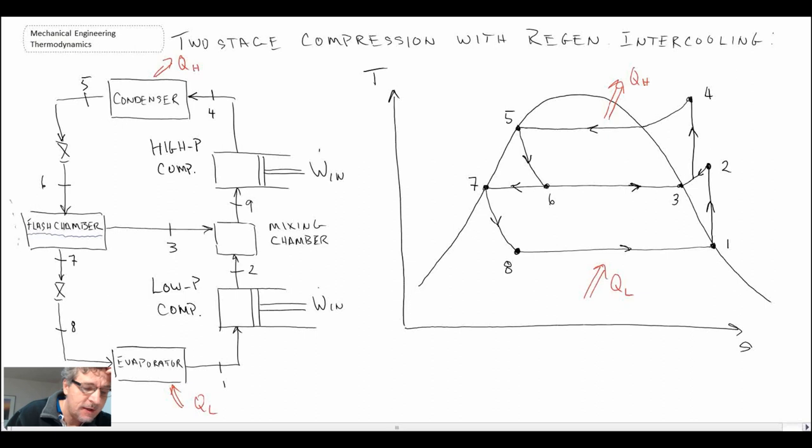You'll notice we have this flash chamber, and basically this is a device that can separate a multi-phase fluid, because we have a multi-phase fluid coming out after our condenser at state 6, which on our TS diagram is right here. And what we are doing is we're stripping out the vapor, and the saturated vapor is what is at state 3, so on our TS diagram that is there, and that is then what flows into the mixing chamber, that's the vapor at state 3 there.